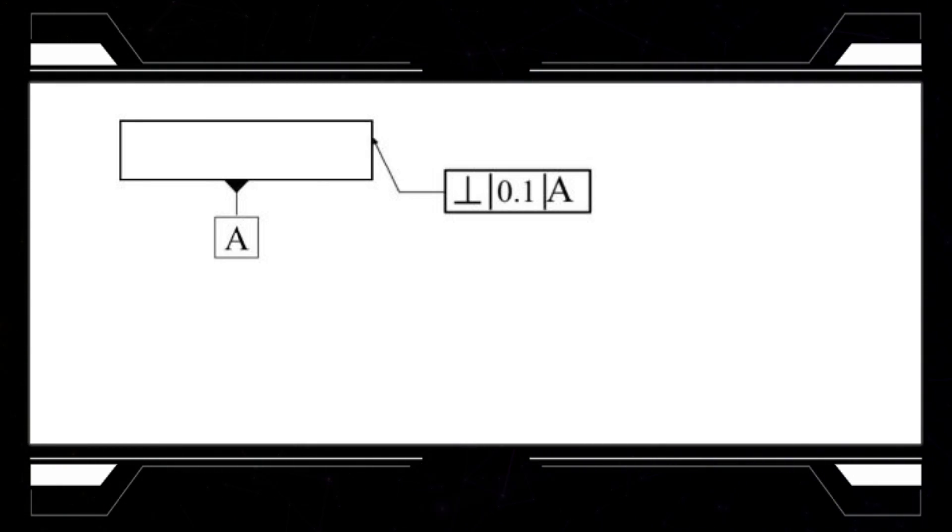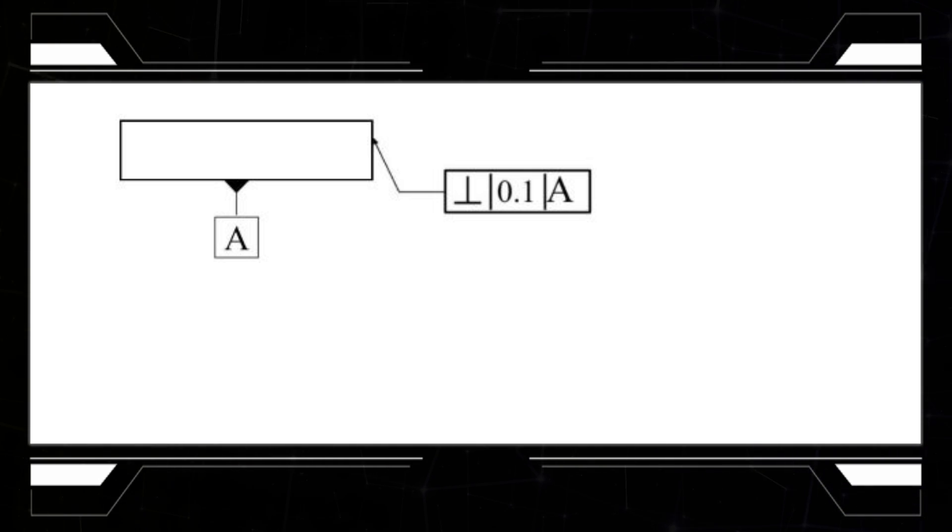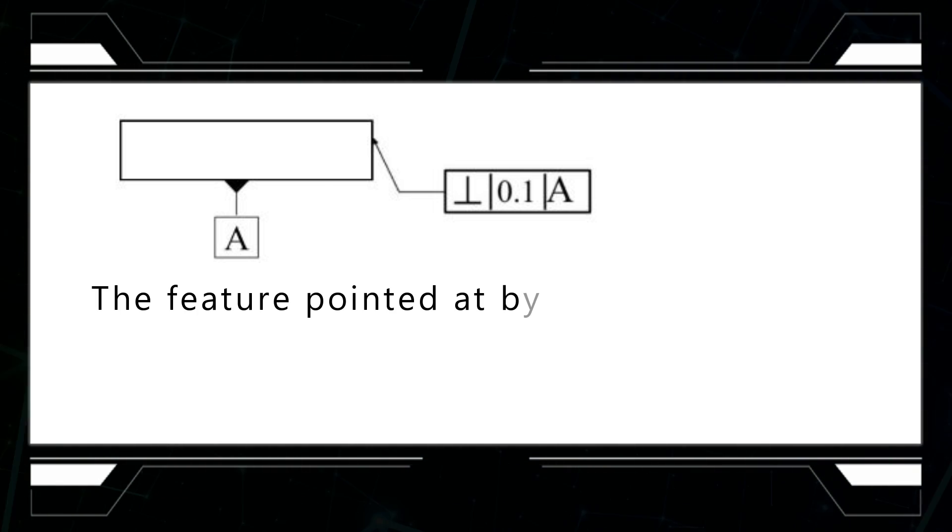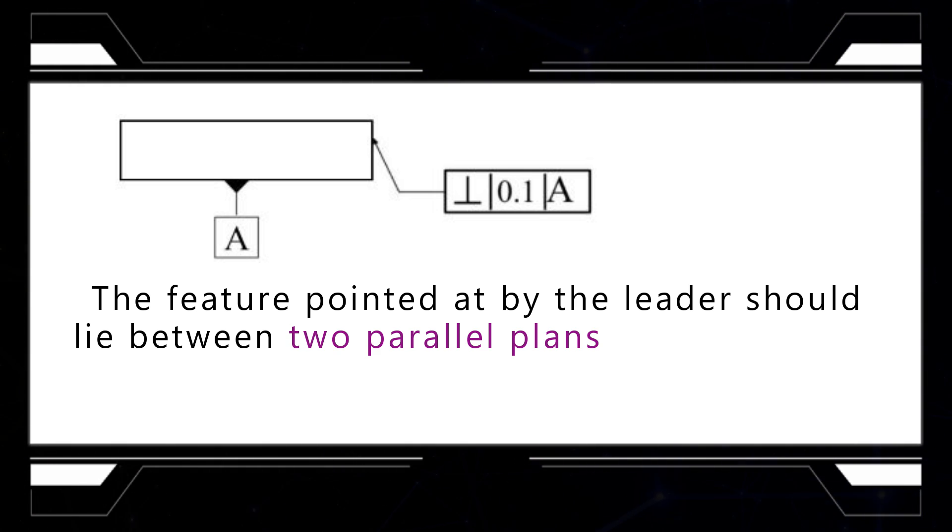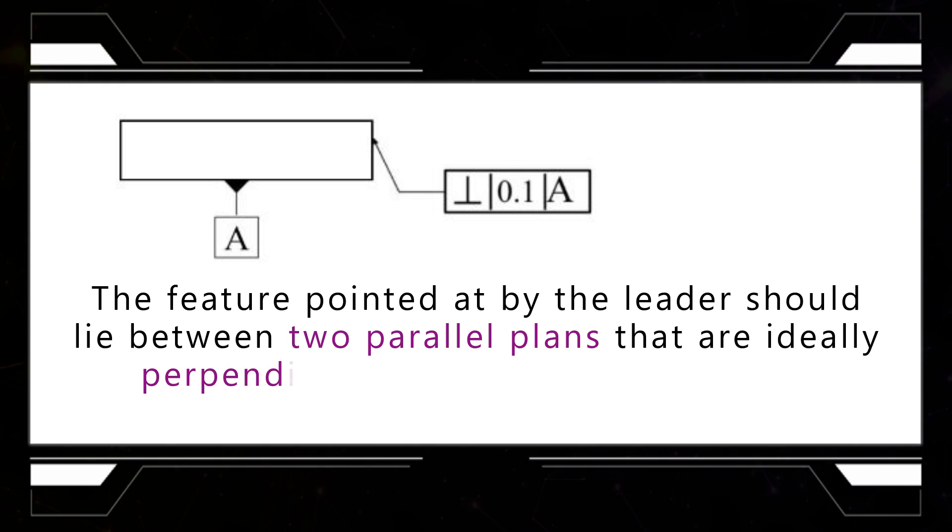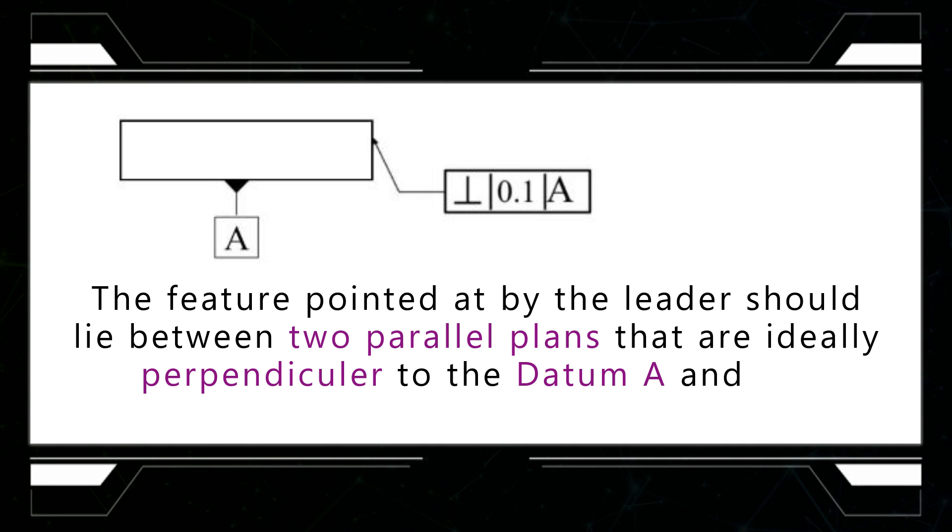So now how would you read this specification out loud? It reads, the feature pointed at by the leader should lie between two parallel planes that are ideally perpendicular to datum A and the distance between them is 0.1.